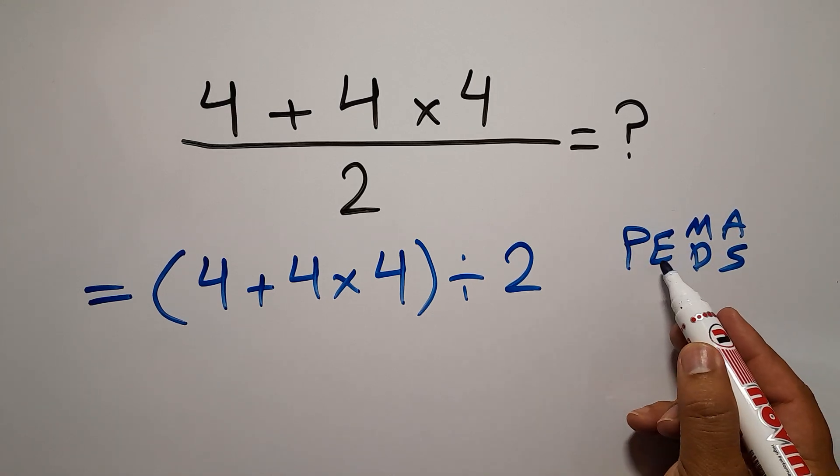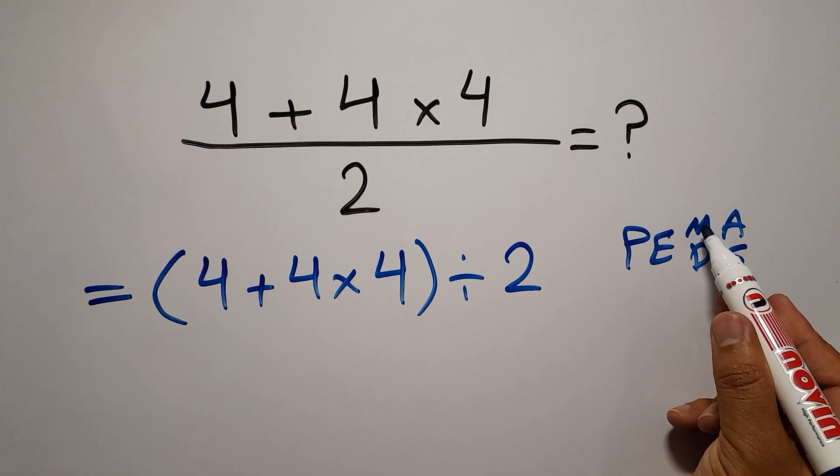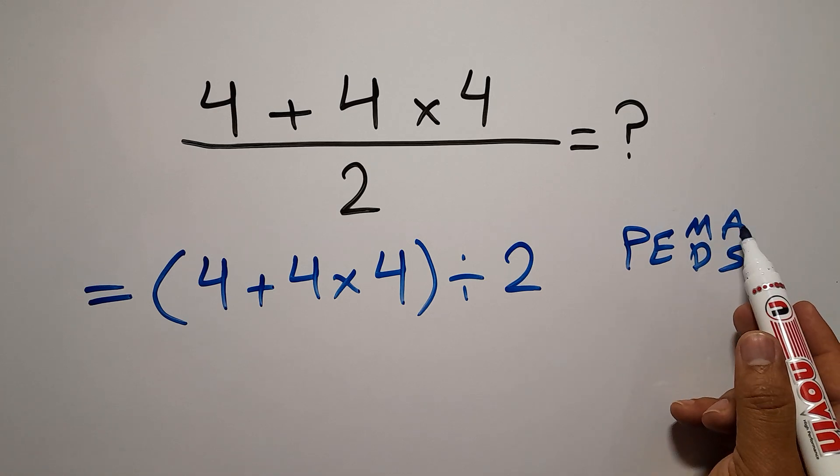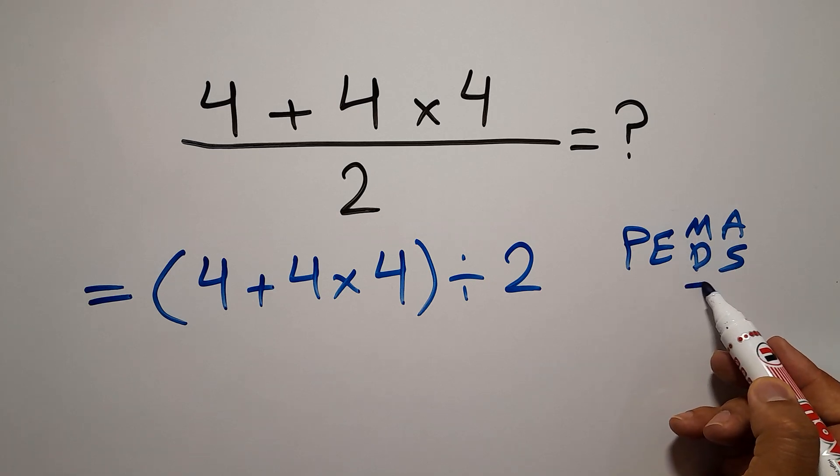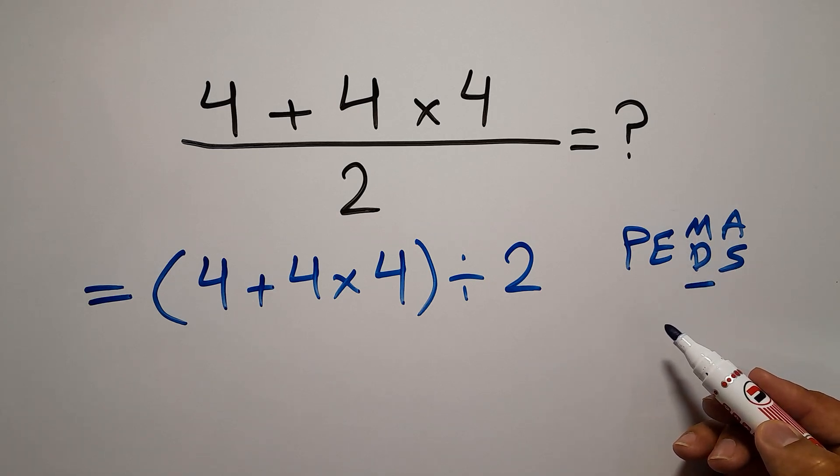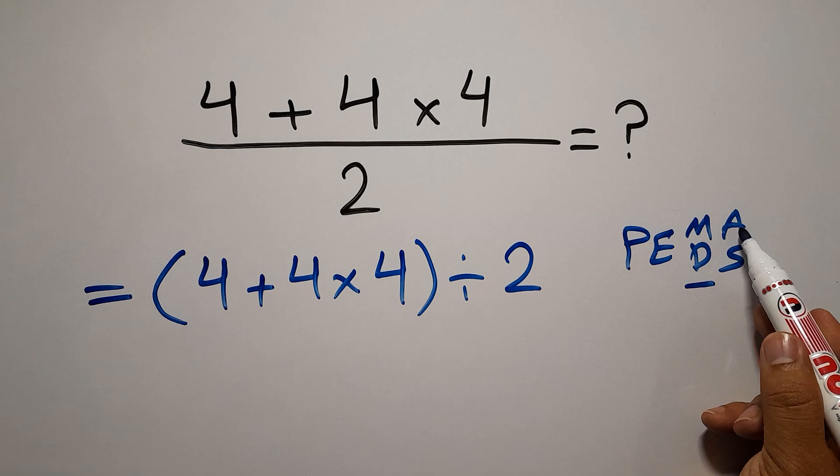Remember that multiplication and division have equal priority, and we work from left to right. The same applies to addition and subtraction. So here, first we have to do the parentheses, and inside this parentheses we have one addition and one multiplication.